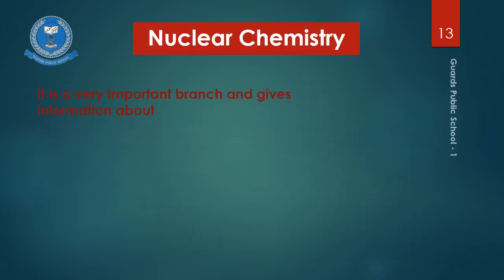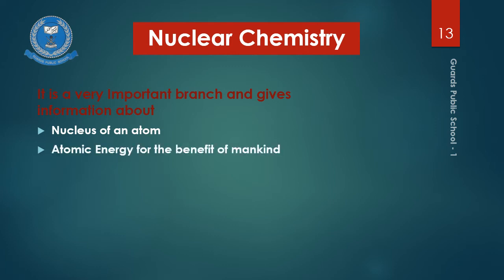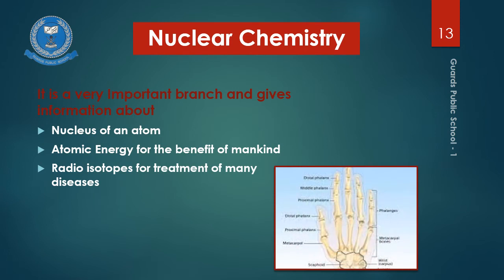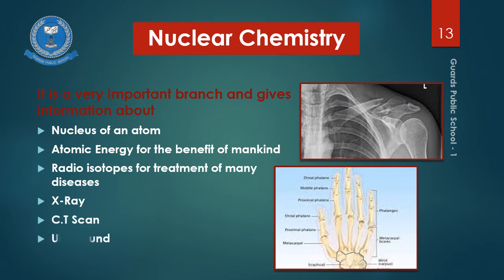Nuclear chemistry is an important branch because it gives us information about the composition, nature, and properties of the nucleus. It also gives us information about different types of radiations emitting from different elements. Many of these radiations are very useful, and we are using them in different machines for the treatment of many diseases. For example, radioisotopes are used for the detection and treatment of many cancers. Similarly, X-ray machines, CT scans, and ultrasound are all used in daily life and play a very important role in finding out diseases — all of these machines rely on important radiations.